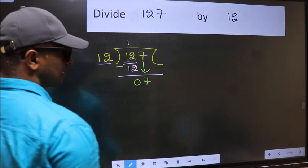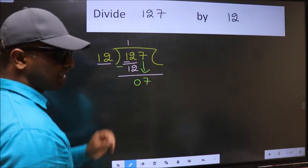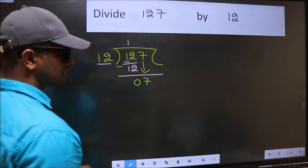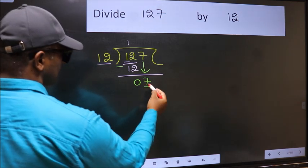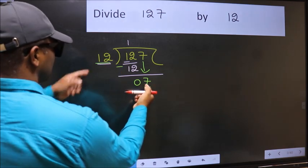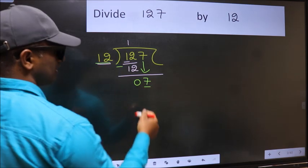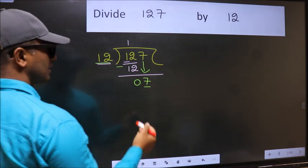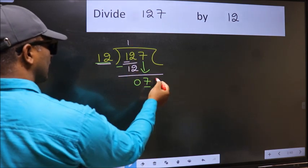After this step, the mistake happens. And the mistake is this. Here we have 7 and here 12. 7 is smaller than 12. So what many do is, they directly put dot and take 0.